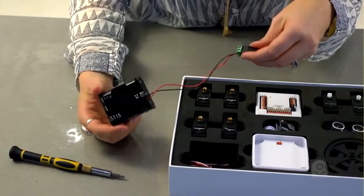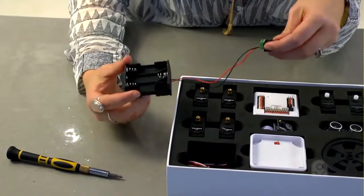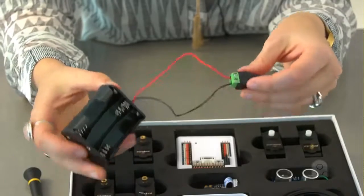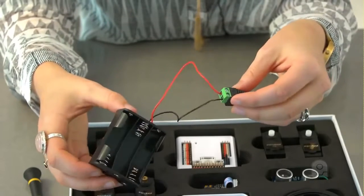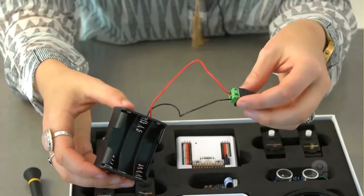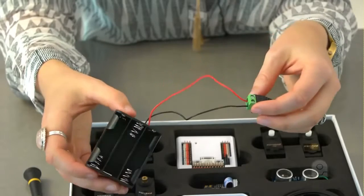We recommend that rechargeable double-A batteries are used only. Rechargeable batteries provide the current needed by the EZRobot servos, where non-rechargeable batteries will provide too much voltage and will reduce the life expectancy of the servos.